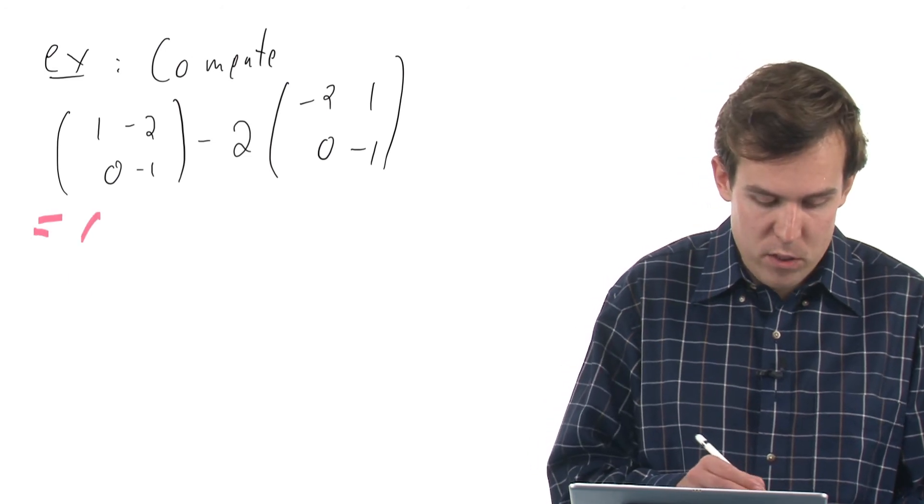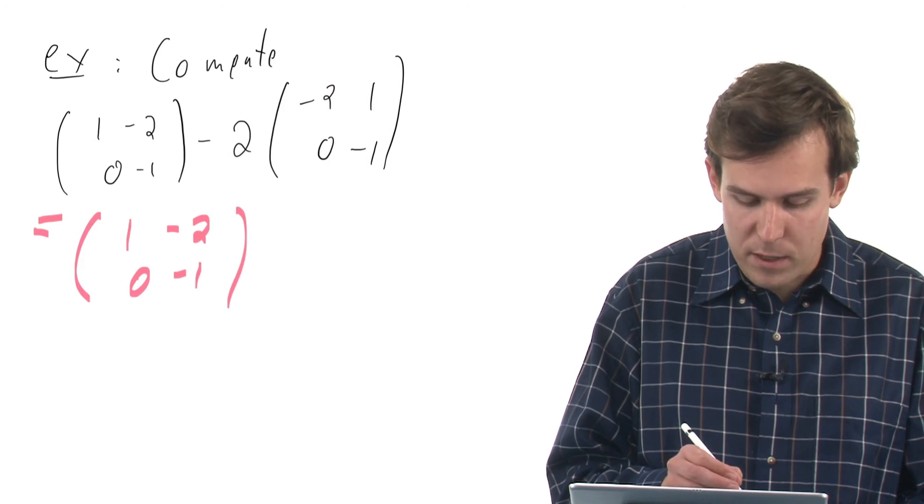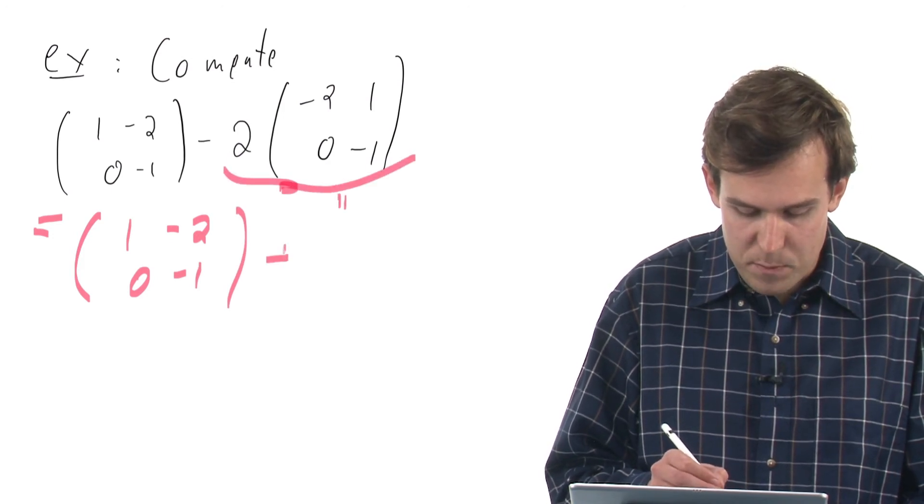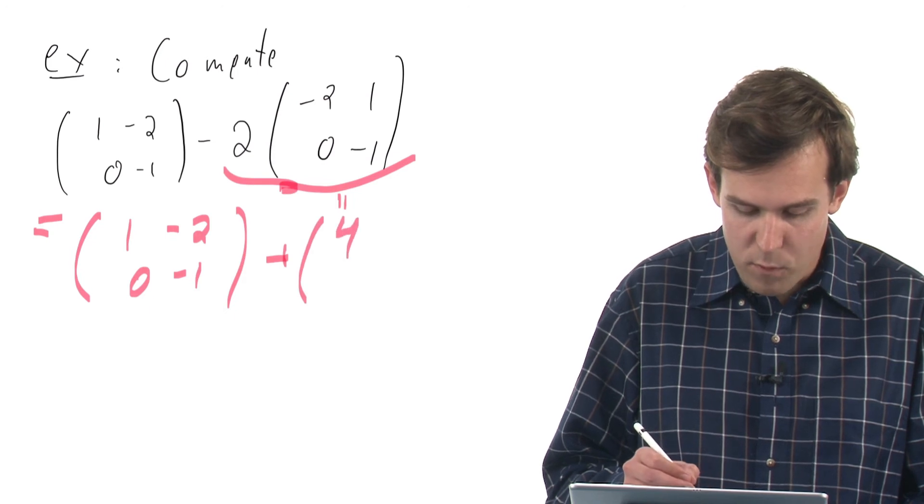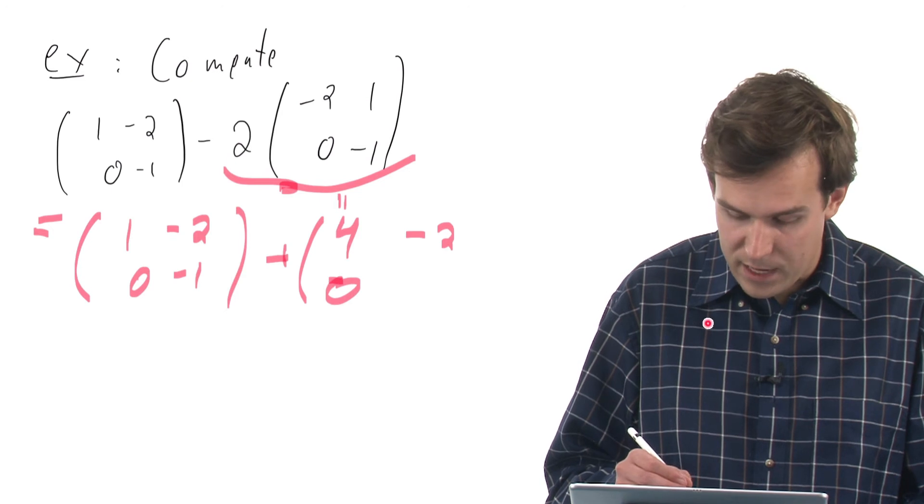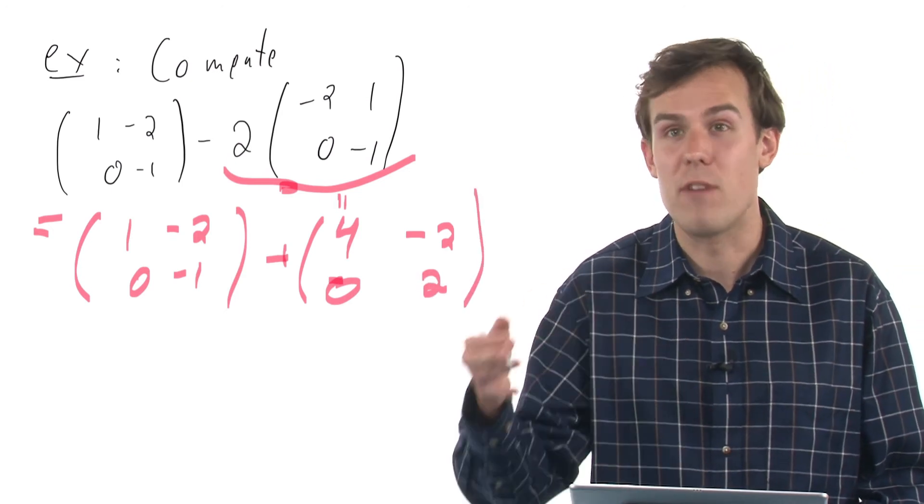So what I'll do is first apply the scalar multiplication here. This gives us (4, -2, 0, 2) by distributing the scalar -2 to every element.